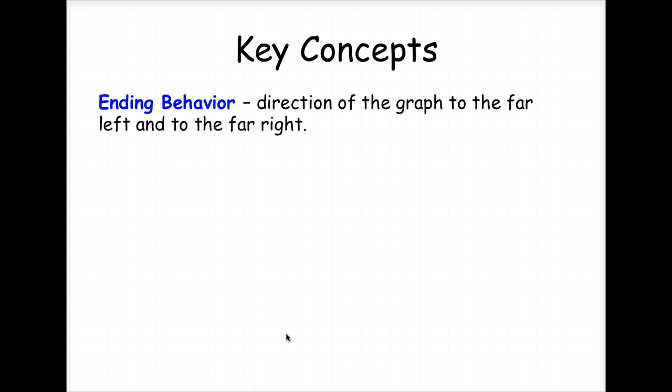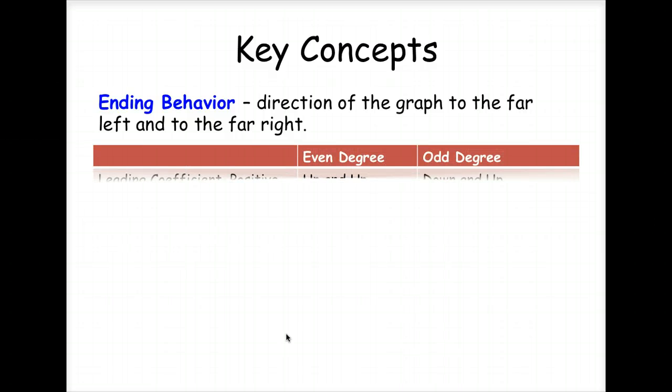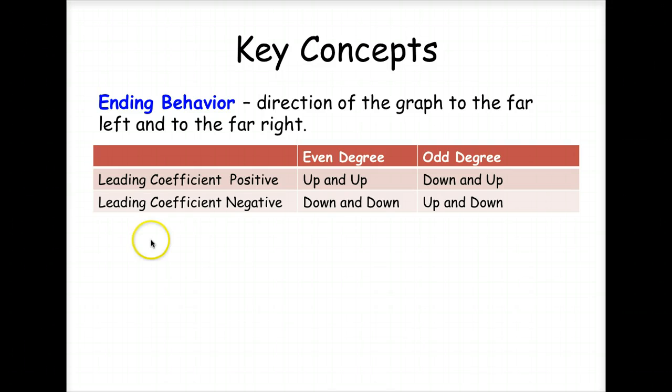Okay, now we're going to look at end behavior, which is the direction of the graph to the far left and to the far right. It makes a difference if the leading coefficient is positive or negative, and whether it's an even degree or an odd degree. Look at an even degree. The ends end up in the same direction, either both up or both down. If it's positive, both up. Negative, both down. If it's an odd degree, if the leading coefficient is positive, it starts down and then goes up. If it's negative, it starts up and then goes down.